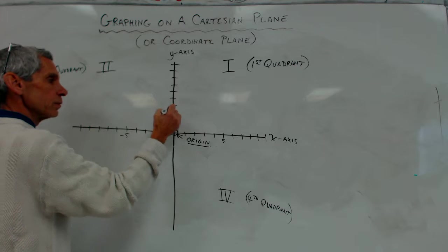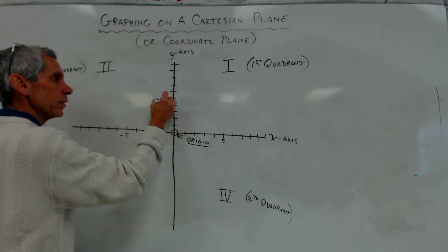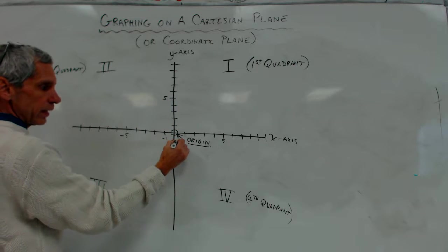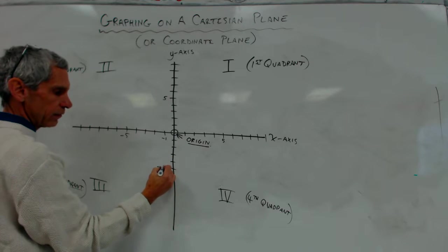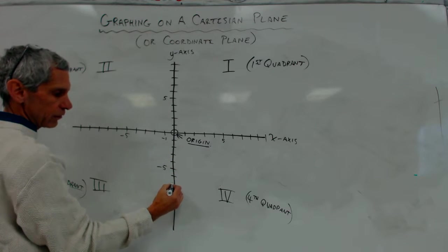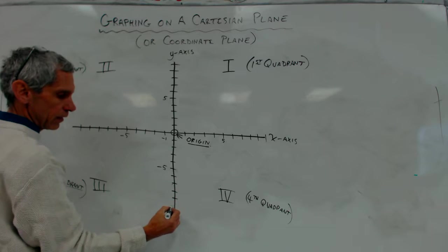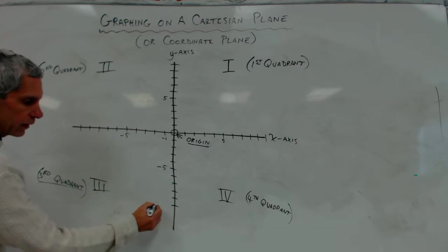With the vertical axis, this is zero, again, and up is positive and down is negative. So, up is one, positive one, positive two, three, four, five, six, seven, eight, nine, ten. Down, negative one, negative two, negative three, negative four, negative five, negative six, negative seven, negative eight, negative nine, negative ten.